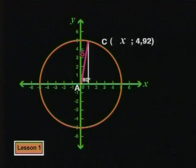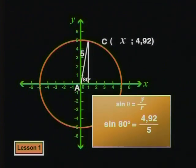But the line segment, the r value, hasn't changed. Once again, we find sine of this angle and we will get 0.985.